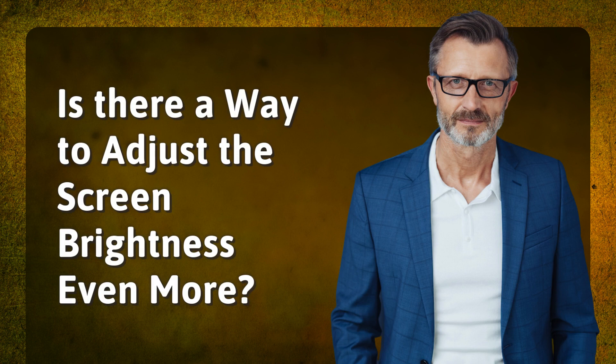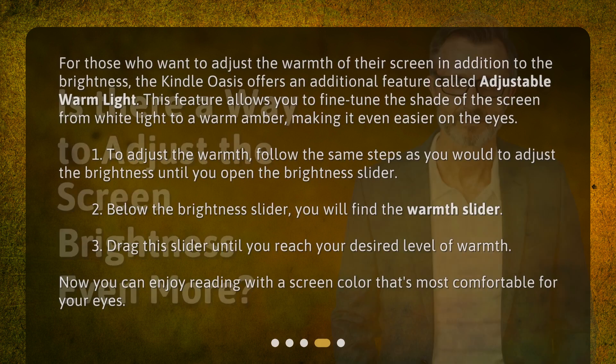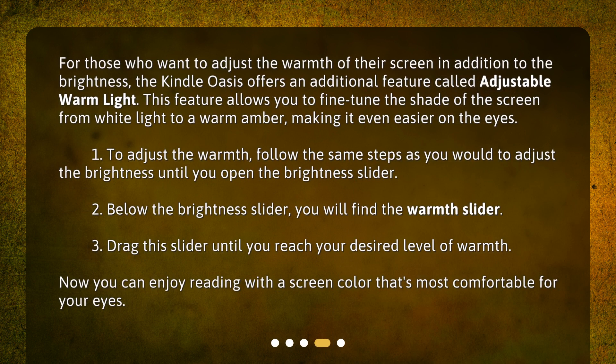Is there a way to adjust the screen brightness even more? For those who want to adjust the warmth of their screen in addition to the brightness, the Kindle Oasis offers an additional feature called adjustable warm light. This feature allows you to fine tune the shade of the screen from white light to a warm amber, making it even easier on the eyes.